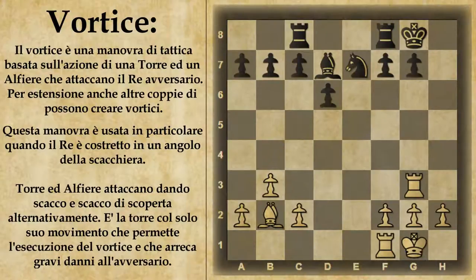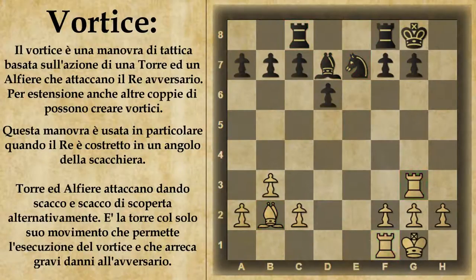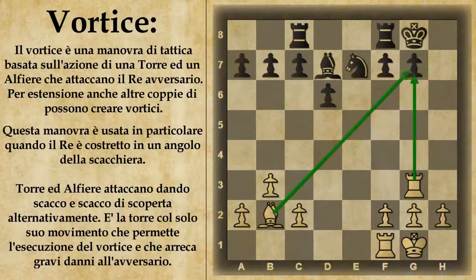Vediamo quindi una posizione caratteristica di vortice. Qui il bianco ha soltanto tre pezzi contro i quattro dell'avversario e quindi è in svantaggio. Tuttavia può utilizzare un vortice per ribilanciare la partita a proprio vantaggio. Abbiamo sia quest'alfiere che questa torre che stanno attaccando pesantemente il re avversario, perché sono dirette a offendere il pedone che gli sta davanti. Quindi con mossa al bianco questo pedone ovviamente cade e poi può cominciare il vortice.